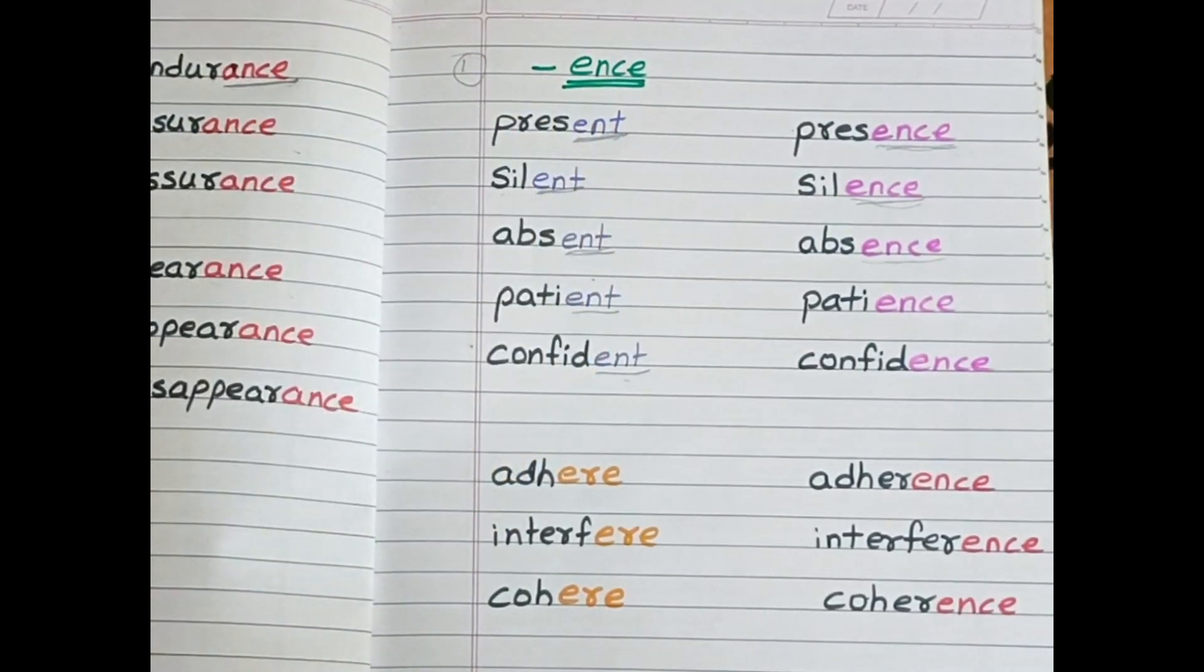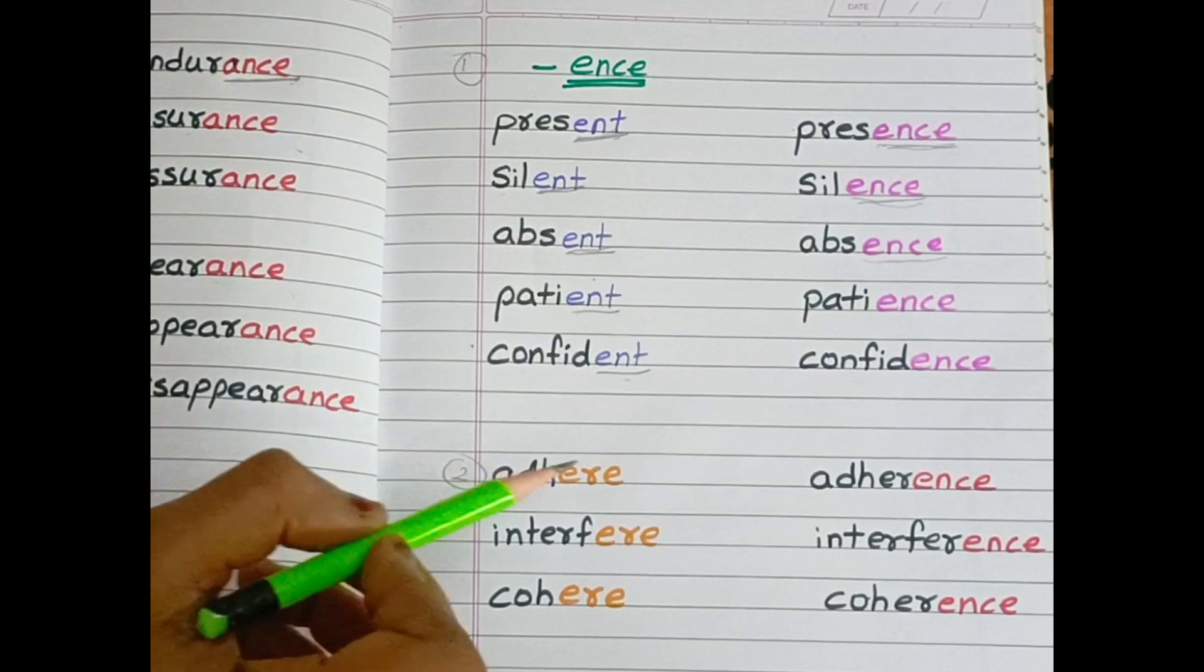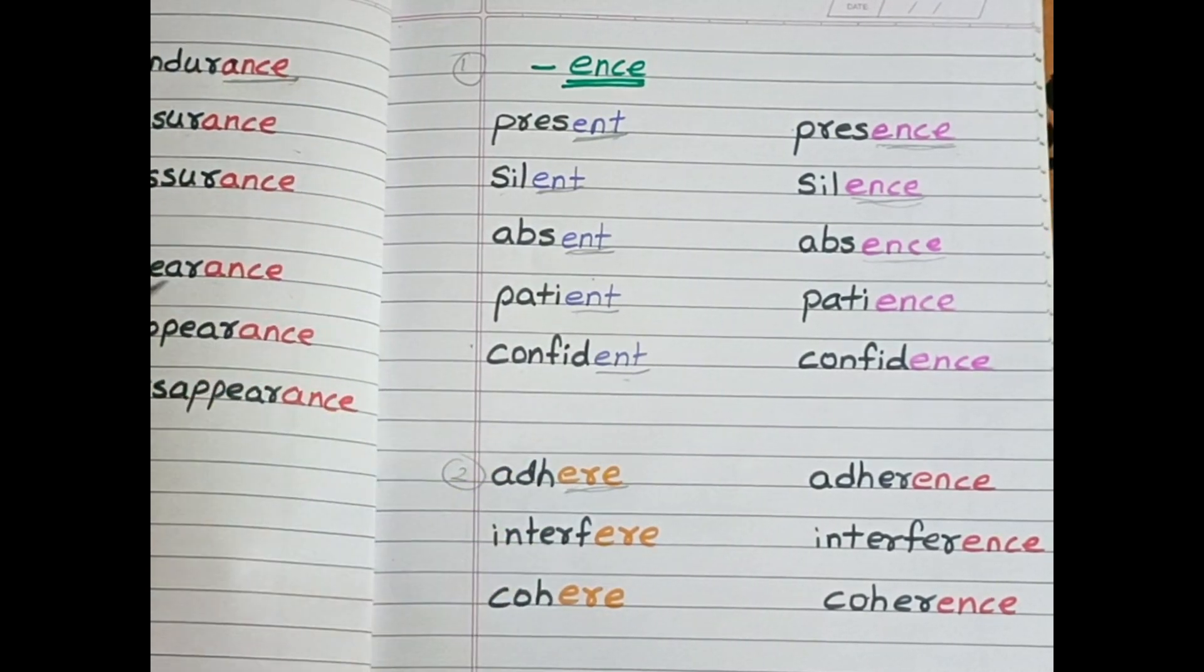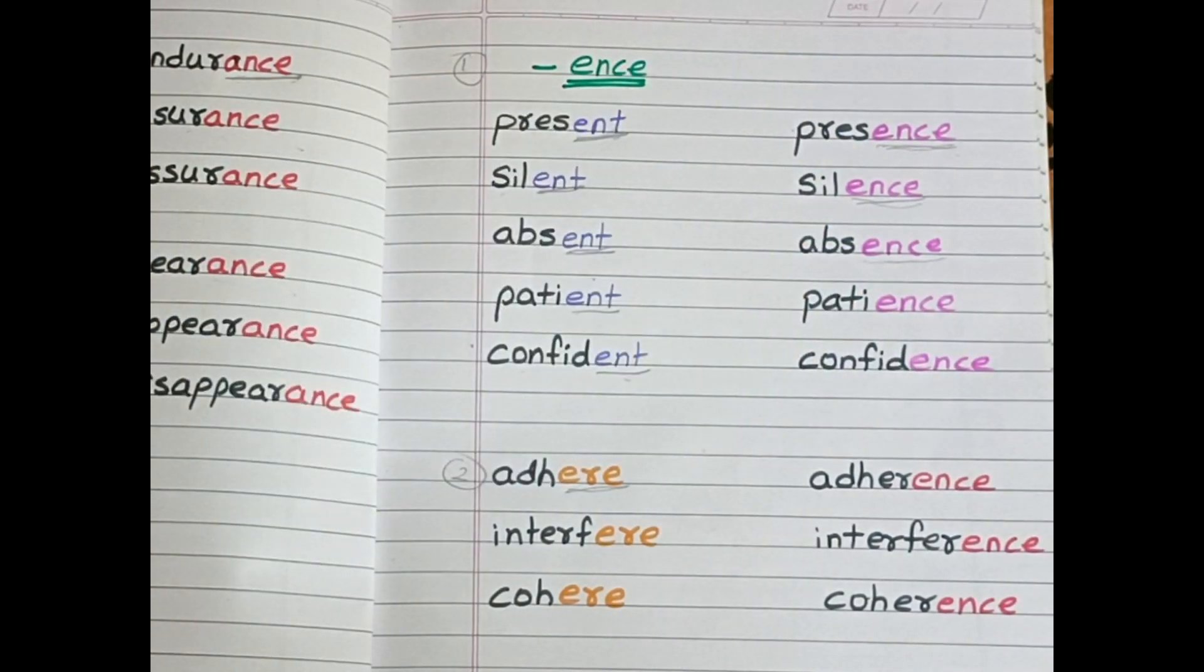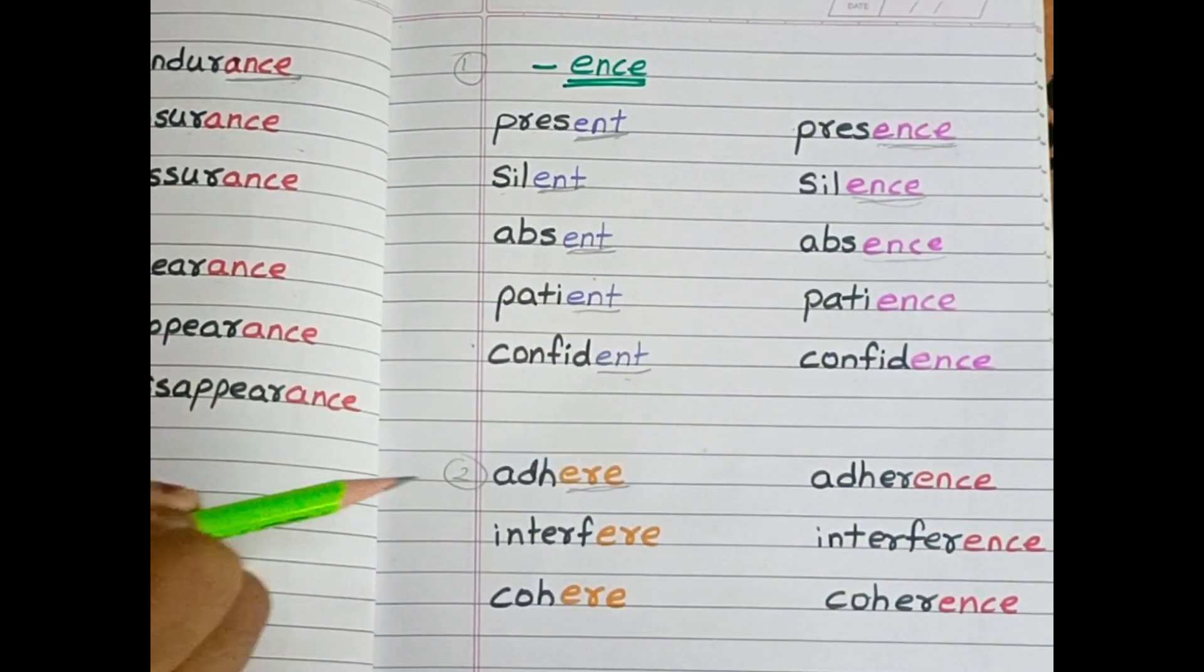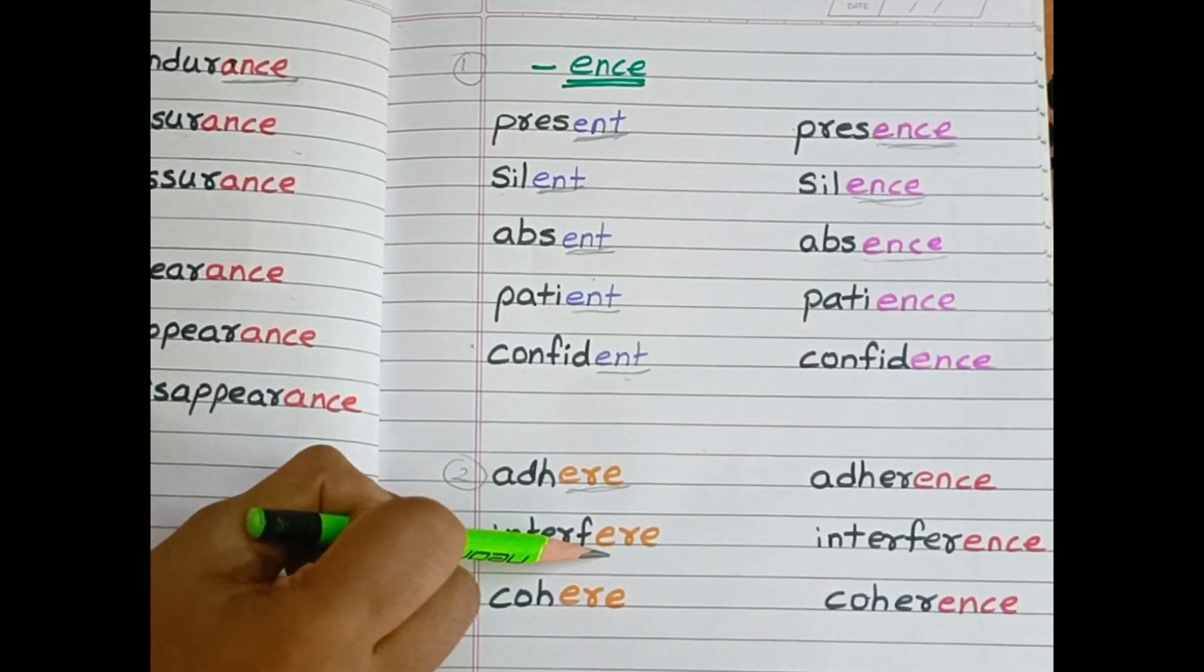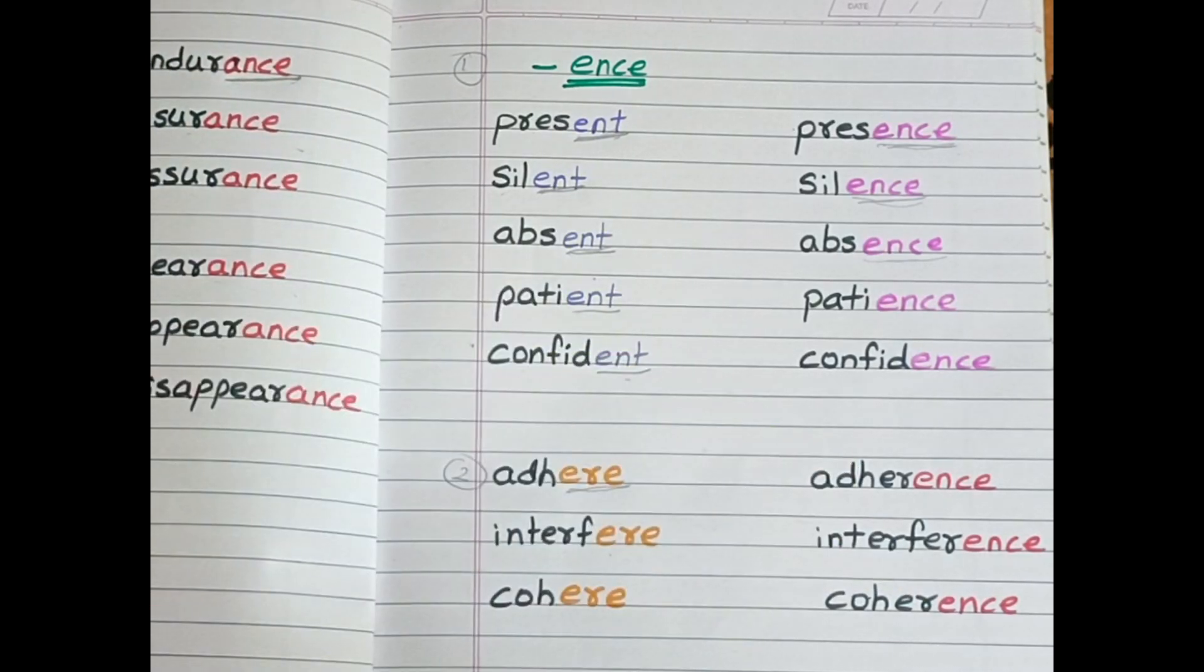This is the first rule, and the second one is, if the word ends with e-r-e, then again we use e-n-c-e. Adhere—adherence. Interfere—interference. Cohere—coherence.